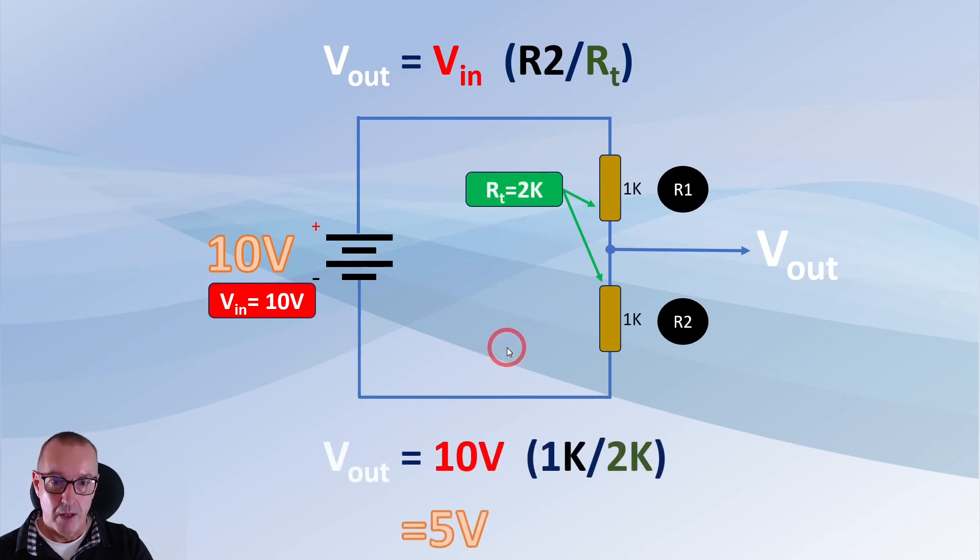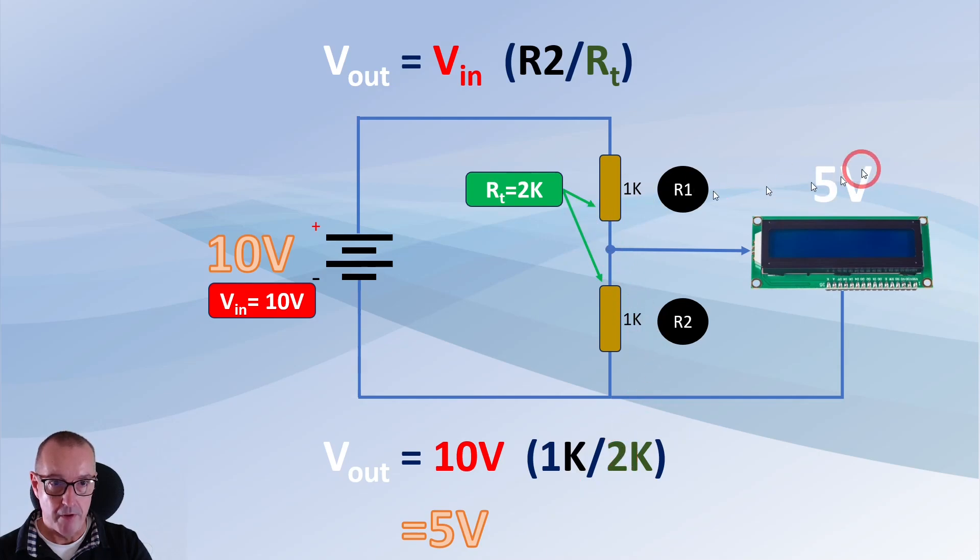All right let's just change this back now to we're going to have a 1k and a 1k here. So we've got coming out of here 5 volts okay because 1k and 1k is 2k. Across here it's 1 over 2. It's 10 times 1 over 2. It's 5 volts.